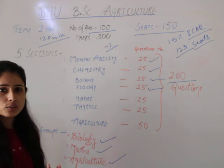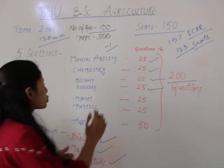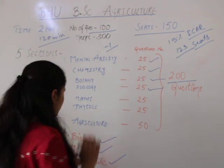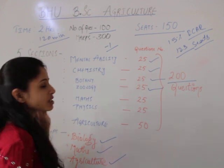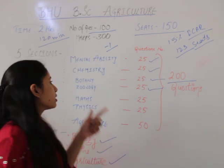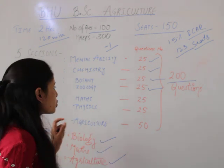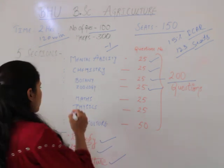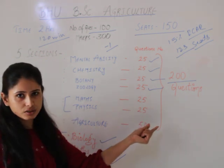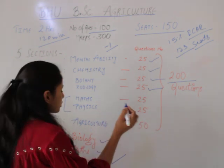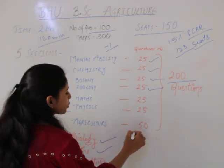For example, if the child is in the Maths group, they will also have Mental Ability plus Chemistry. If you have the Math group, you need to do Maths and Physics of 20-25 questions each. If you have the Math group, you need to do 50 questions total.